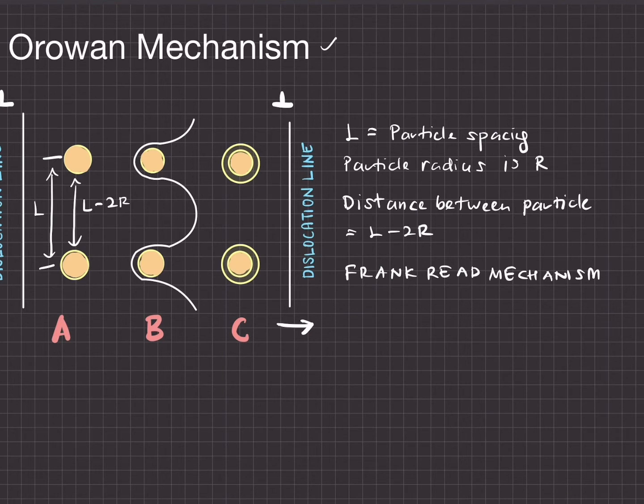As we can see in the figure here, the dislocation is moving to the right. When the dislocation is moving to the right, it will encounter the particle. When it encounters the particle, it does not cut through it.